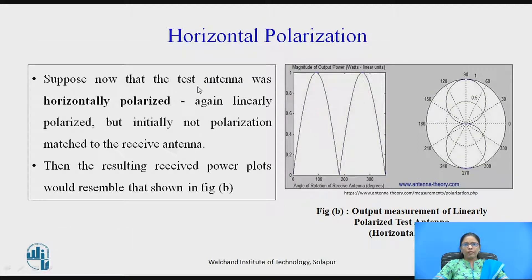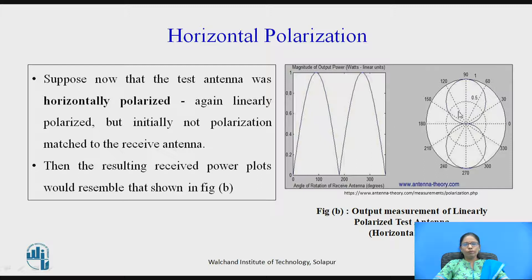If the test antenna is horizontally polarized and you rotate the receiving antenna while taking readings, the received antenna gives a plot indicating linear polarization. From the polar plot, you can understand this kind of result corresponds to horizontal polarization. So, the receiving antenna should also be horizontally polarized in this case.